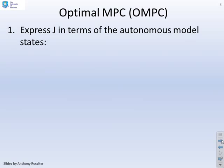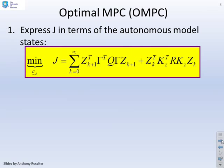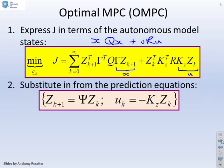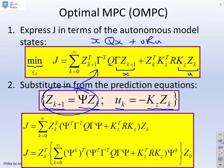What about optimal MPC then? What I want to do is express J in terms of the autonomous model states. So what I've done, if you remember, before we had xqx plus uru, but I know that x is given by gamma z, and I know that u is given by kz zk. So all I've done is replace the x and the u terms in my performance index with gamma z and kz z, so that now everything is written in terms of the states of my augmented model. Now what I'm going to do is substitute in from my prediction equations. So here's my augmented model, zk plus 1 equals psi zk, and uk equals minus kz zk. So I'm now going to substitute these expressions, or in particular this expression, into here. And this is what we get. You'll find I've got the sum from k equals 0 to infinity of zk transposed, and then here's my weighting matrix in the middle times zk.